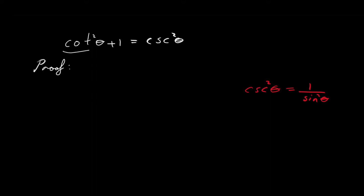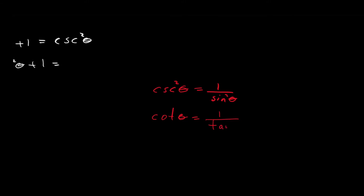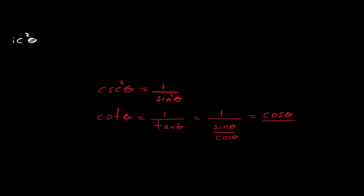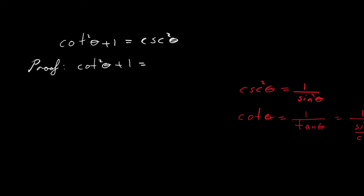Let's begin the proof, starting on the left-hand side of the equation. The cotangent of theta squared plus 1 — well, cotangent is also a reciprocal trigonometric function. The cotangent of theta is the reciprocal of the tangent of theta. By definition, the tangent of theta is sine of theta over cosine of theta, so cotangent is 1 over that, which equals cosine of theta over sine of theta. So cotangent of theta squared equals cosine of theta over sine of theta, all in brackets squared — which is the same as squaring numerator and denominator — plus 1.